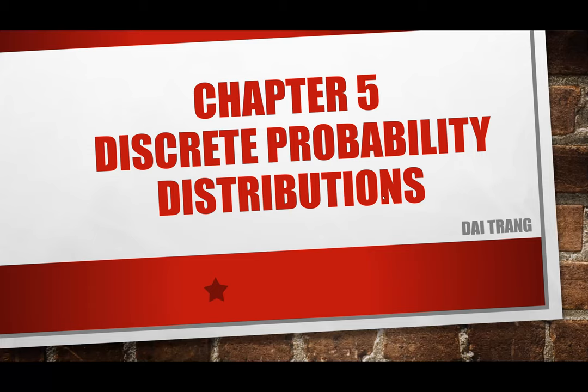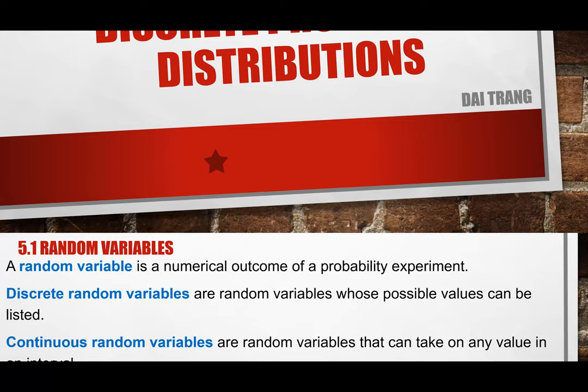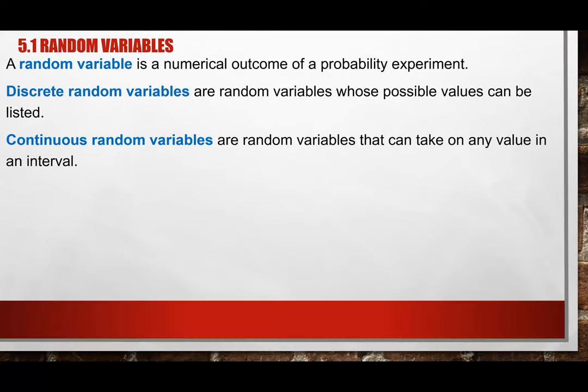Chapter 5 deals with probability distribution, mainly discrete probability distribution. This is a review question for your midterm: what is discrete data or a discrete variable? In chapter 1, we distinguished the difference between discrete versus continuous.